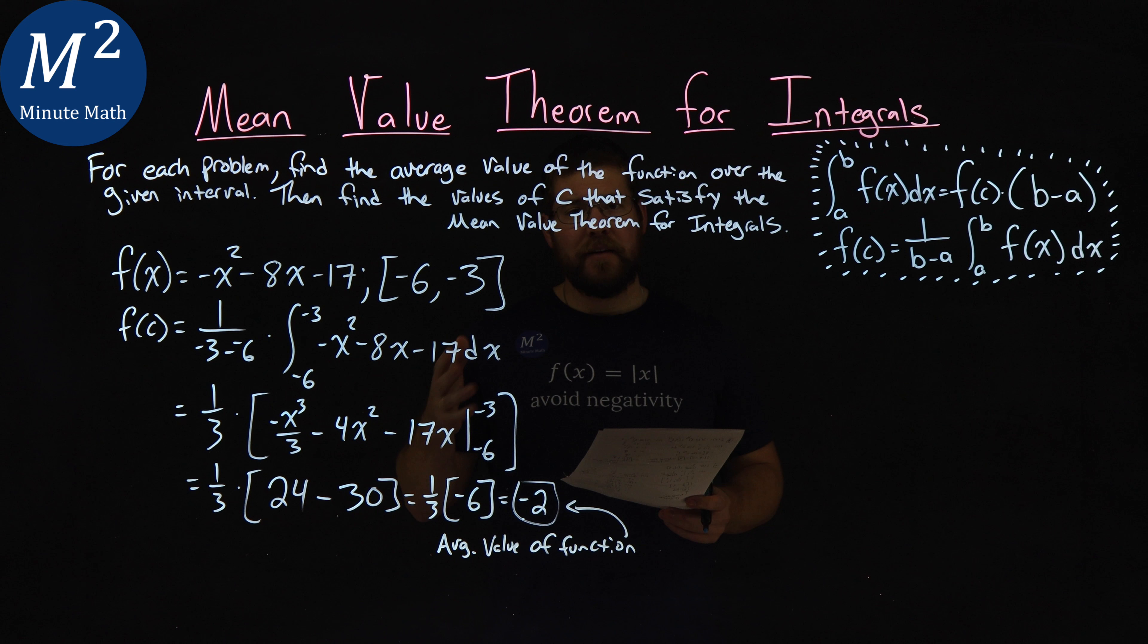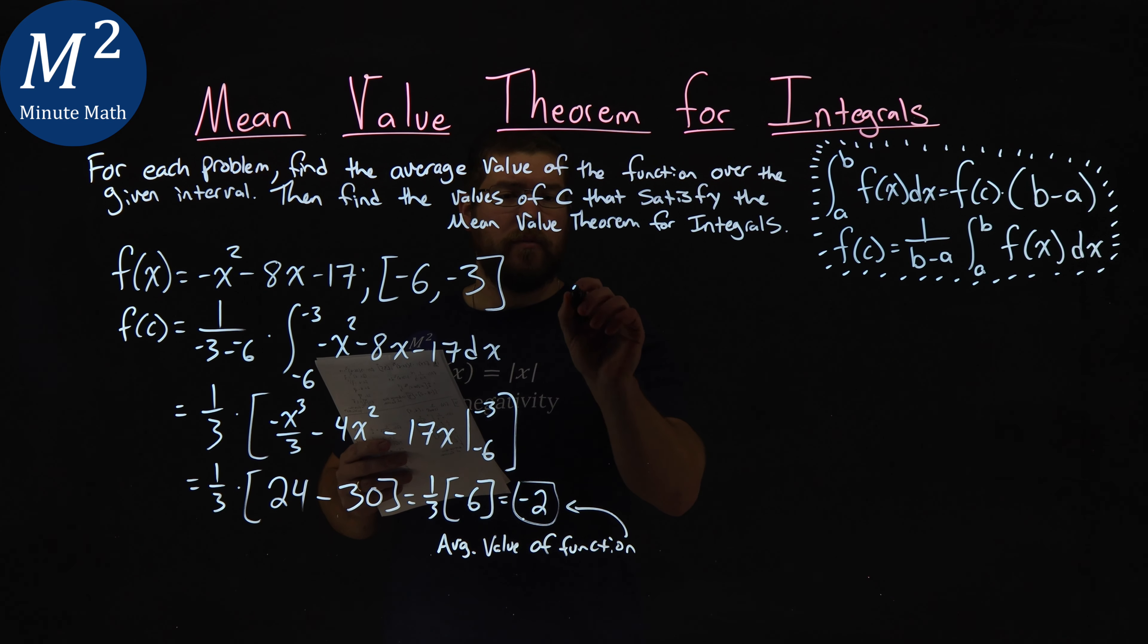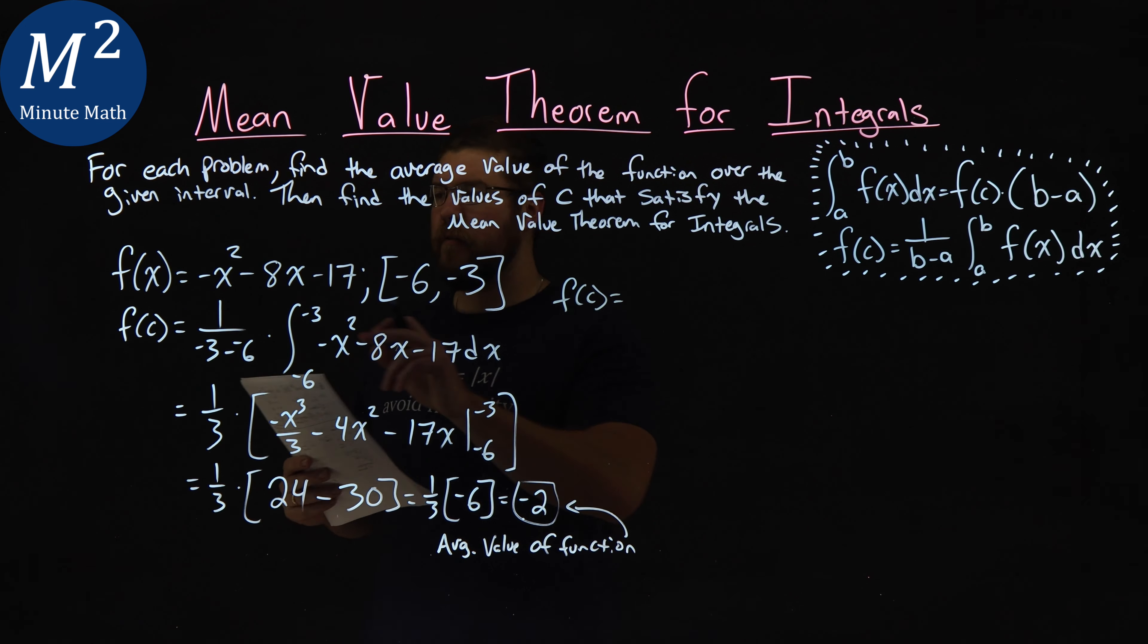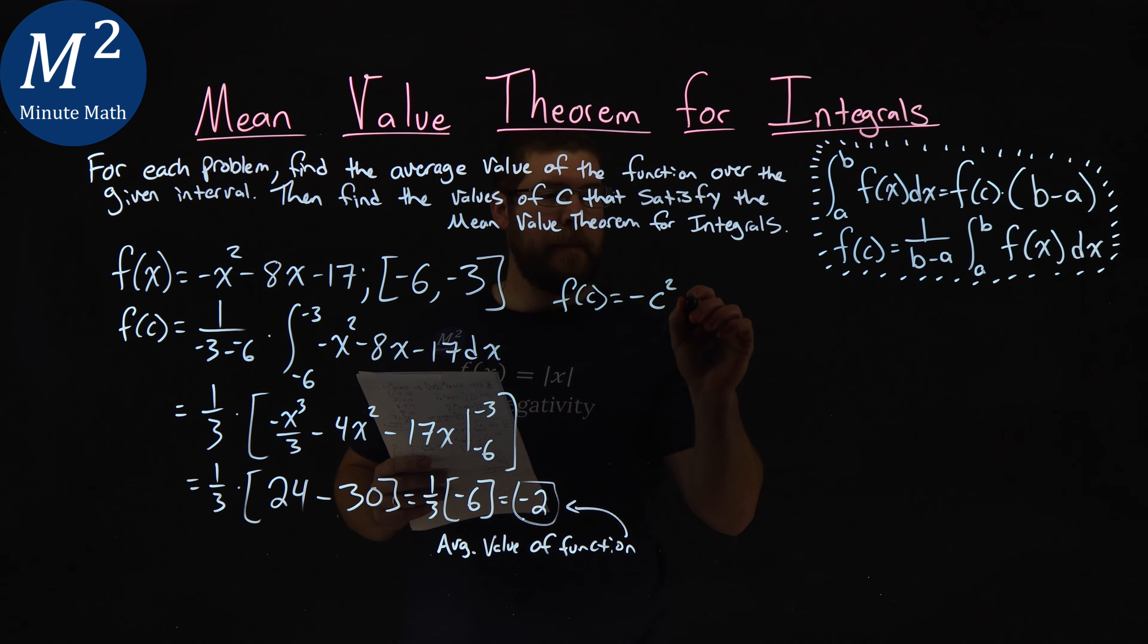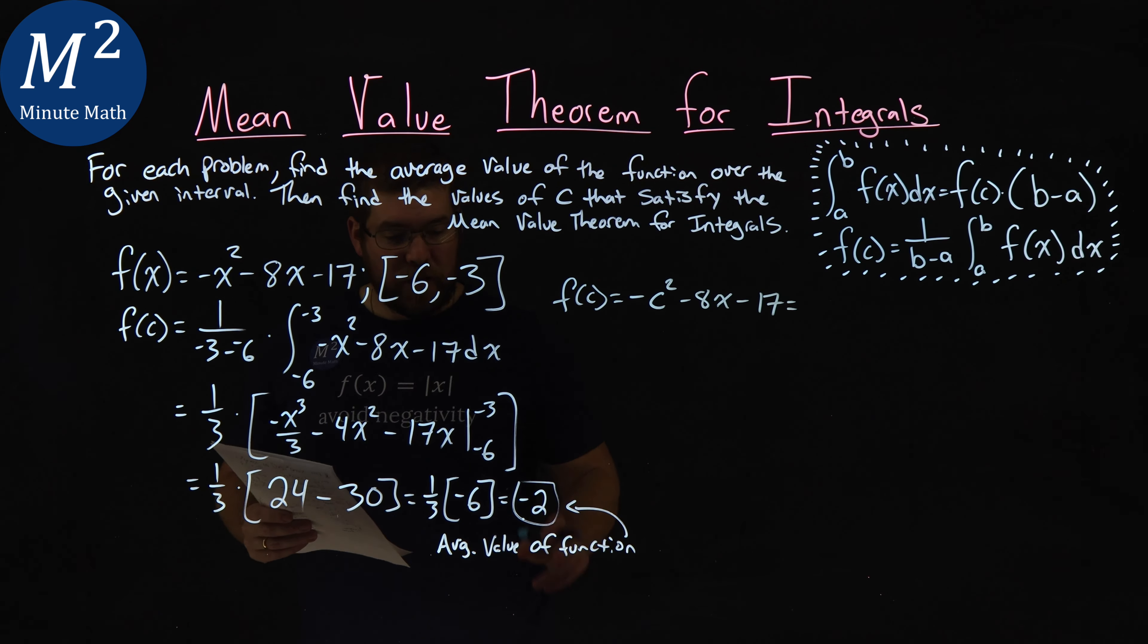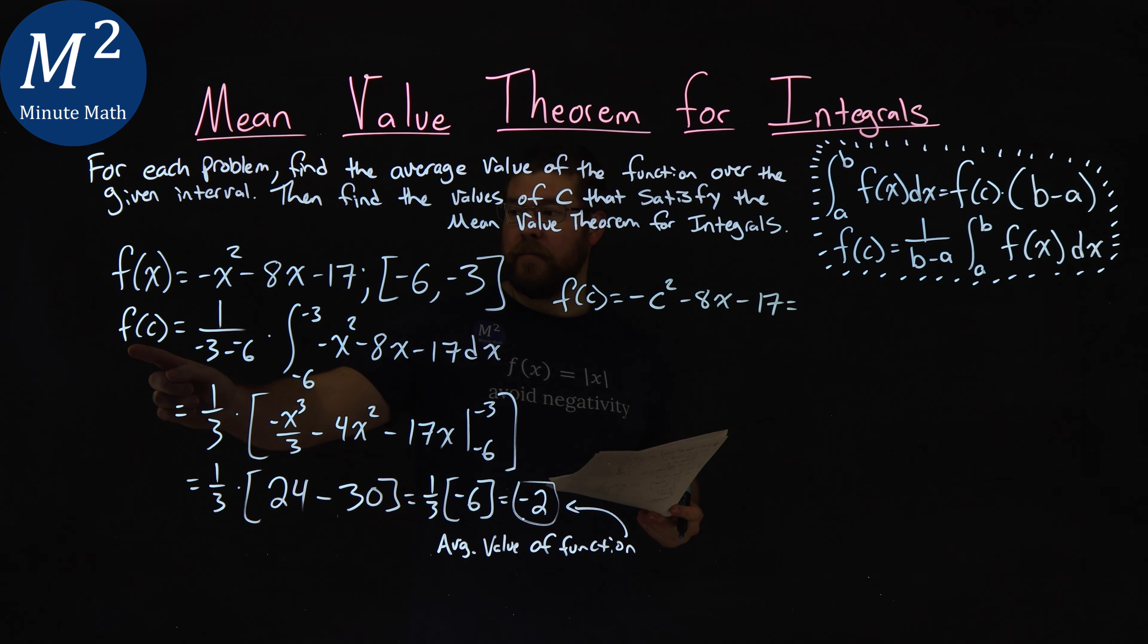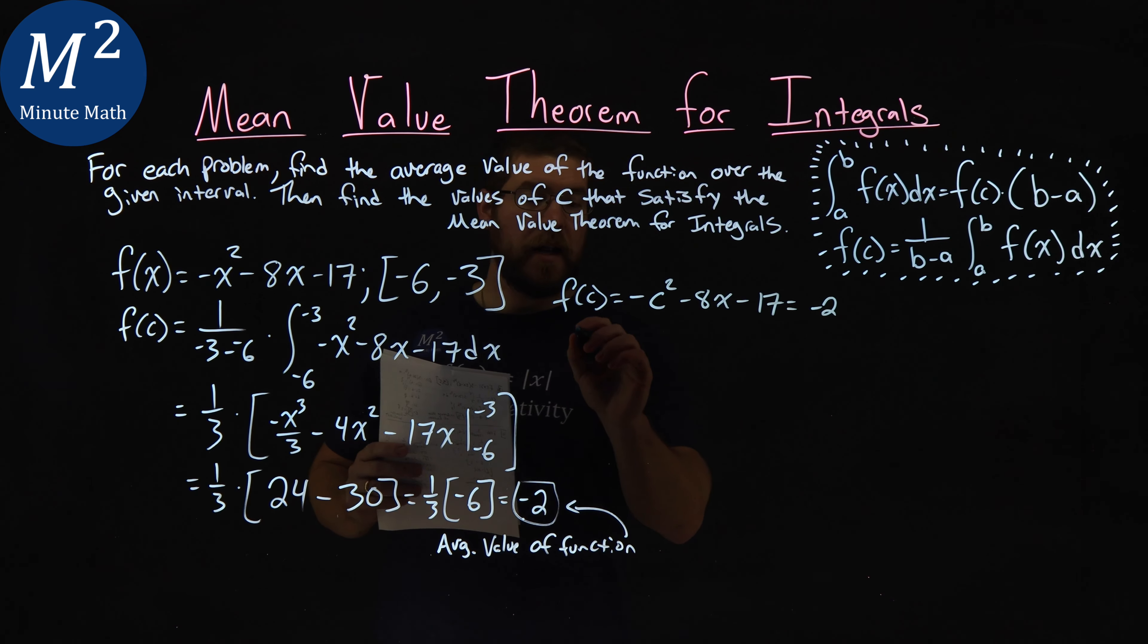Now we want to find the values of c that satisfy the mean value theorem. So what I do is I find what is f(c). Well, our function f(x) is right here, so I plug c in for x: negative c squared minus 8c minus 17. And that's going to be equal to our average value. Remember, this whole thing is equal to f(c), so negative 2. Now we're solving.